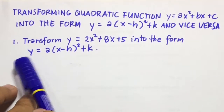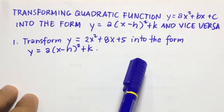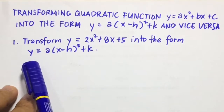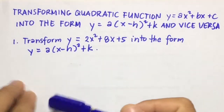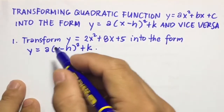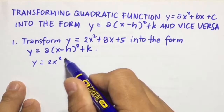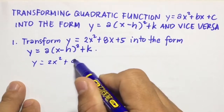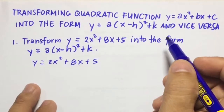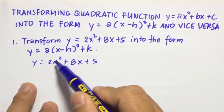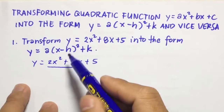Example number 1: transform y equals 2x squared plus 8x plus 5 into the form y equals a times the quantity of x minus h squared plus k. So we're going to write here first y equals 2x squared plus 8x plus 5. Now what we're going to do first is we're going to factor out 2 in the x terms.